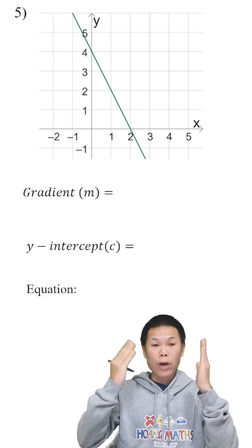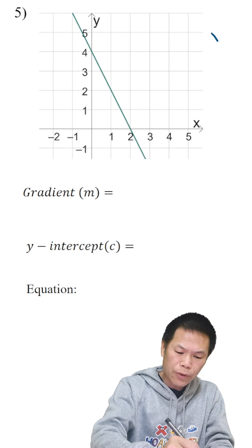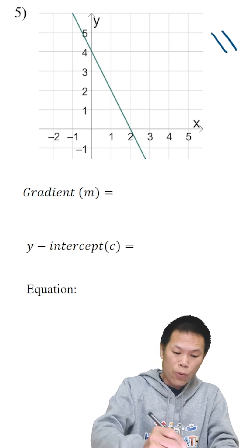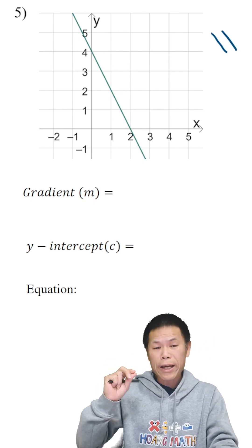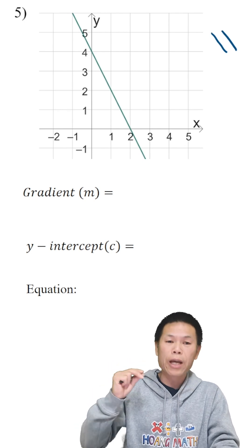First of all, we know that the gradient is negative because it's heading this way. When you see x is increased, y is decreased, so it's going in the opposite direction. We have a negative gradient.